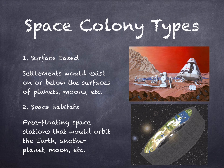To meet these needs, there are a couple of different colony types to examine. One would involve settlements on the surface of some world or moon, such as the Moon or Mars, where a colony is set up either on the surface or below it. Another type would be a freely floating space station or space habitat that would orbit the Earth, a planet, or a moon.